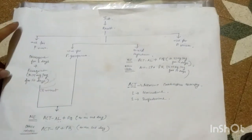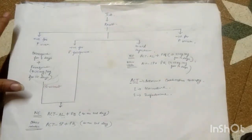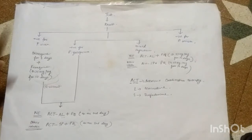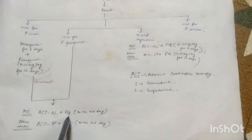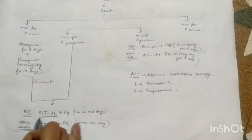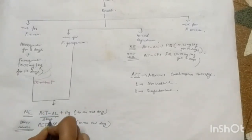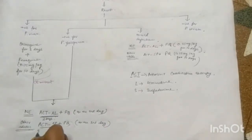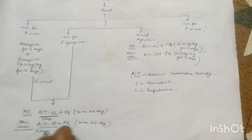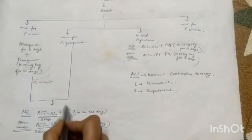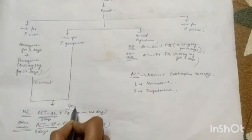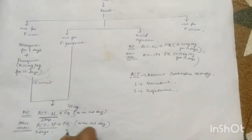So this is the regimen of malaria that is being followed. One more thing to add: ACTAL is used for three days, same for ACTSP. The primaquine used in falciparum cases is one dose, that is 45 milligram, whereas in vivax and mixed infection it is 0.25 milligram per kg for 14 days.